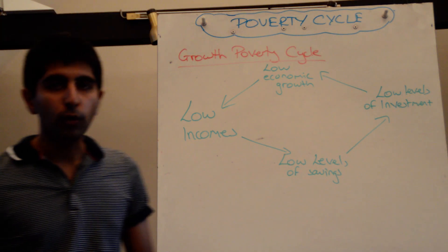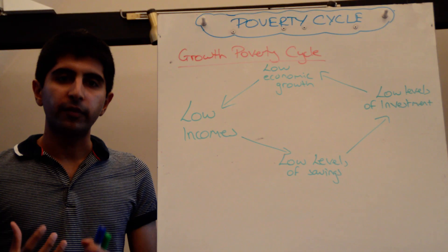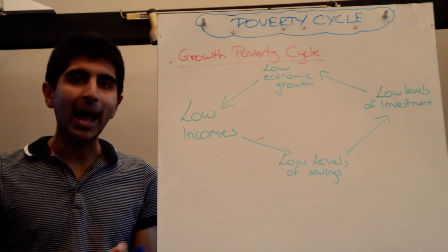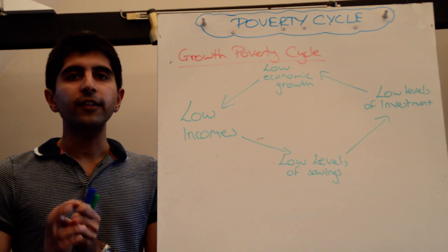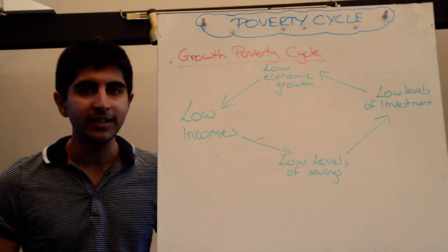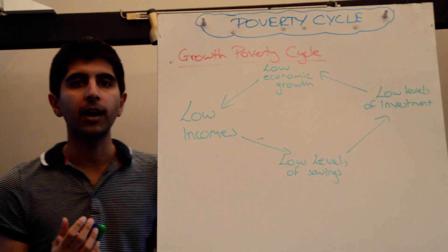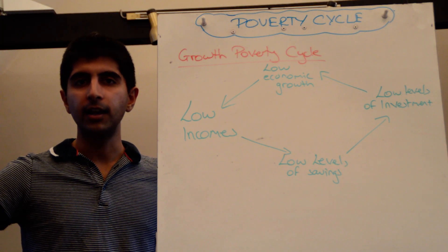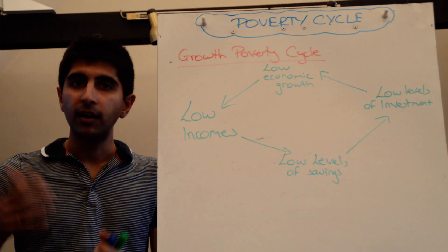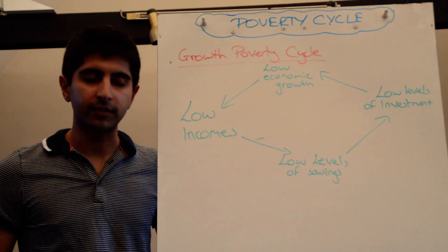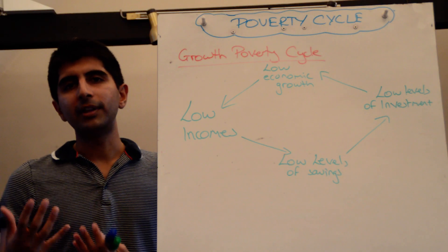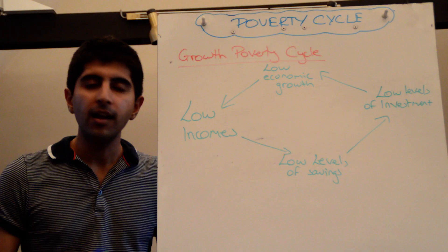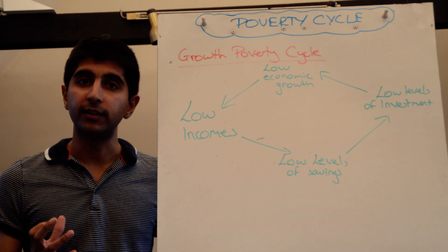So first of all, what do we mean by poverty? There are two types of poverty: relative poverty and absolute poverty. If somebody is living in absolute poverty, it means their income is below a certain threshold determined by the World Bank or a major development-related organisation. A common definition is that if income is less than $1 a day, people are living in absolute poverty.